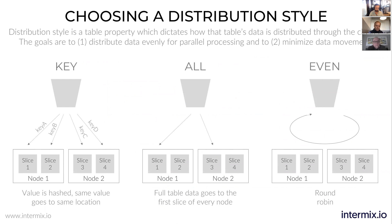There are three types. The default is even — rows for one table are distributed evenly across all the nodes in a particular cluster. This is done in a round-robin fashion, so disk utilization will be the same and the number of rows will be the same across all nodes.